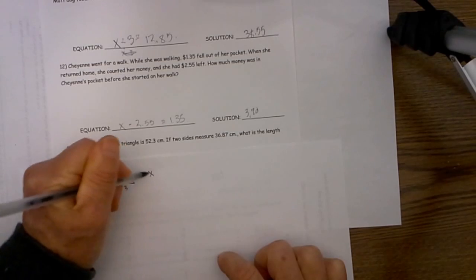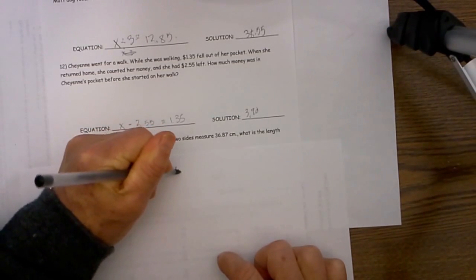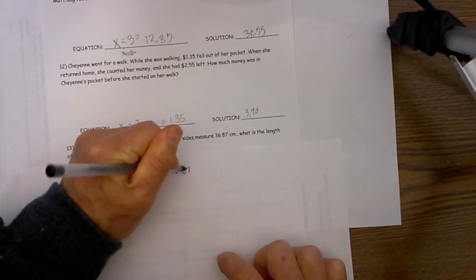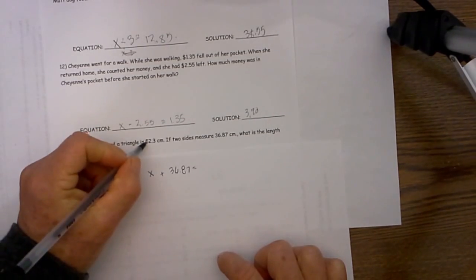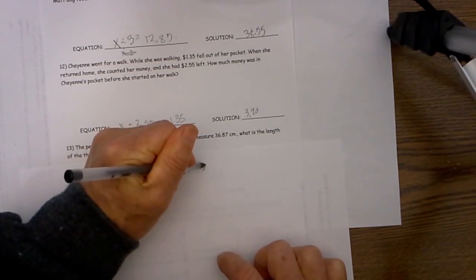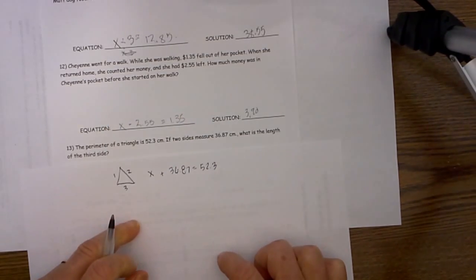We will say x plus the length of the two sides which is 36.87 is going to equal the total perimeter length of 52.3.